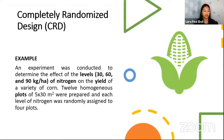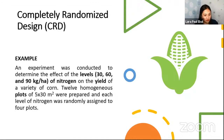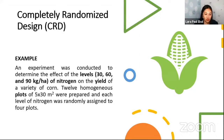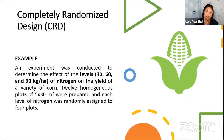We will now have this example under CRD. An experiment was conducted to determine the effect of levels — 30, 60, and 90 — of nitrogen on the yield of a variety of corn. This is a very common example. 12 homogeneous plots, imagine the plots, 5 by 30, were prepared.